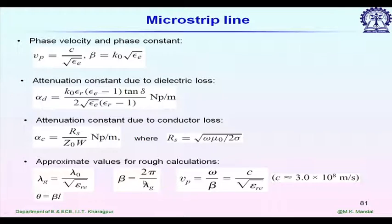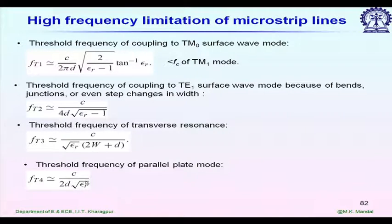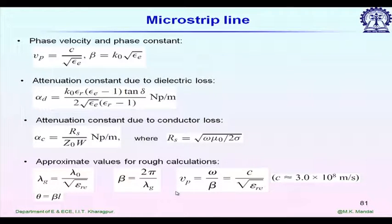Some approximate parameters: lambda_g = lambda₀ / √(epsilon_e), beta = 2π / lambda_g, and theta = beta × l. Since we are assuming TEM mode, we can use the formulas we learned for a two-wire transmission line. In the next section, we will see other factors that determine the highest frequency of operation — just like the coaxial cable, we need to avoid surface wave mode generation and avoid any higher-order TE or TM mode generation. From these conditions we have some high-frequency limitations of microstrip line.